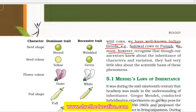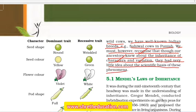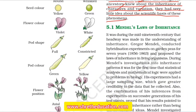We must, however, recognize that though our ancestors knew about the inheritance of characters and variation, they had very little idea about the scientific basis of this phenomenon. The scientific knowledge of the laws of inheritance was established by Mendel.